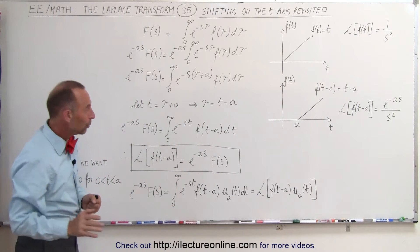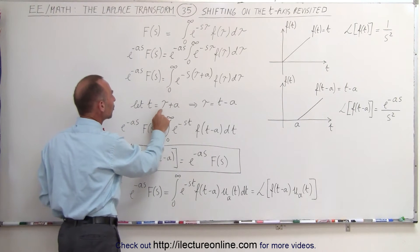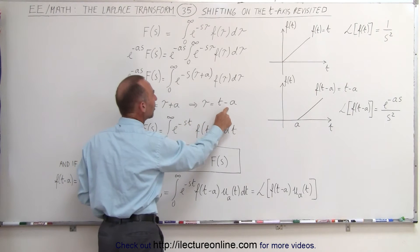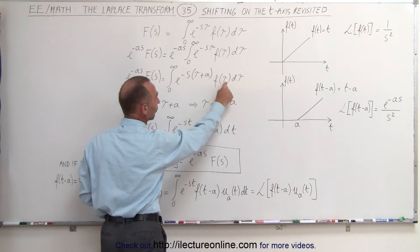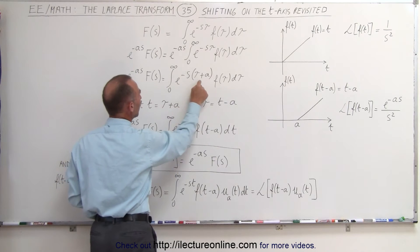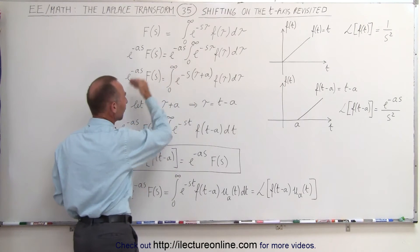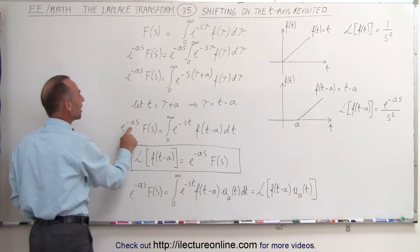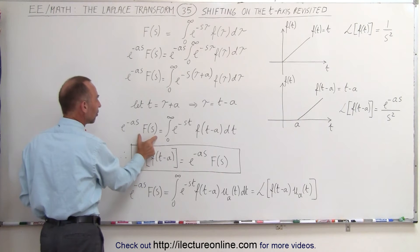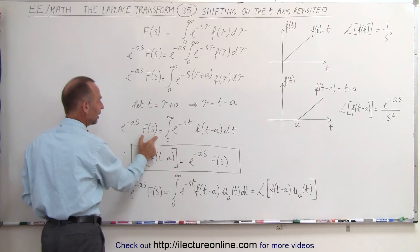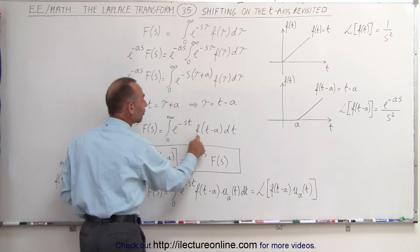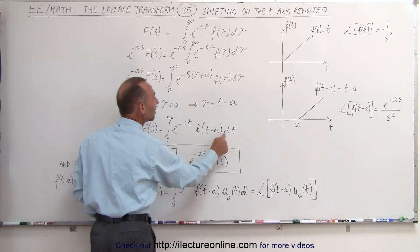Now for a moment, if we let t equal tau plus a, such that tau equals t minus a, and we make those replacements, the very same function will look like this: e to the minus as times F of s — the transfer function — is equal to the integral of e to the minus st times f of t minus a dt.